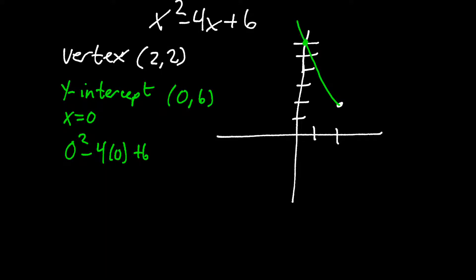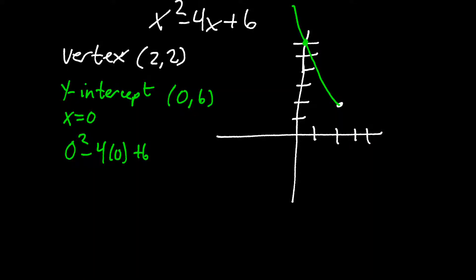The graph is going to go up and through that point at (0, 6). Since it's symmetrical, going left 2 puts us up at 6, so going right 2 from the vertex will land us at the same value. And there we have it — that's all we can find from the standard form of quadratic equations: the axis of symmetry, the vertex, and the y-intercept. Good luck.